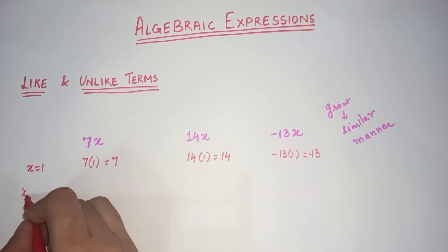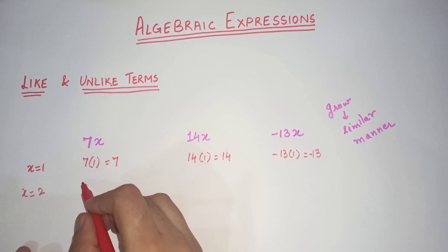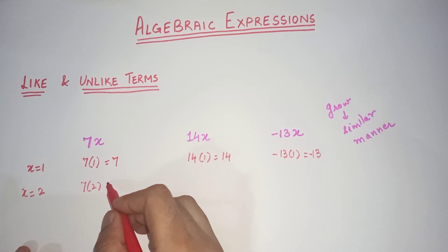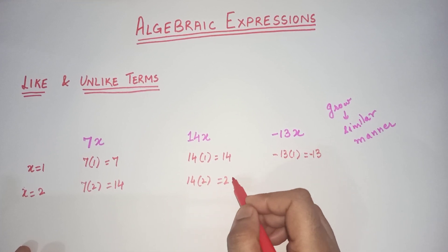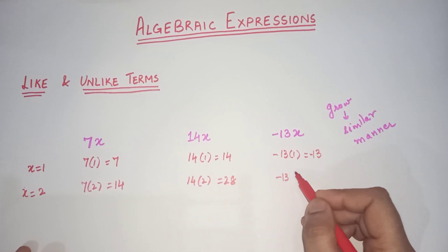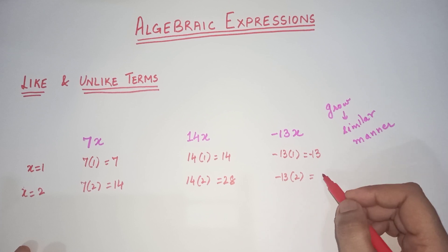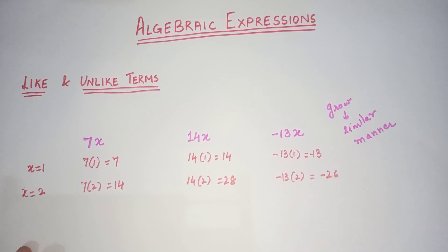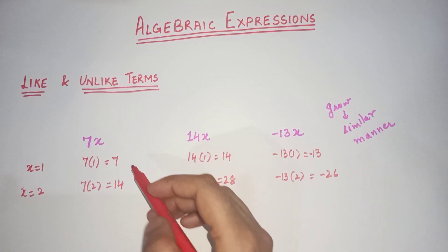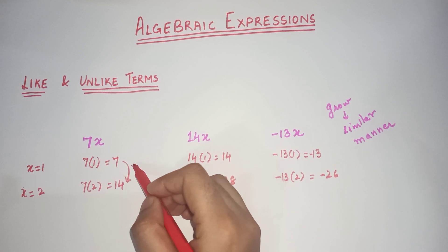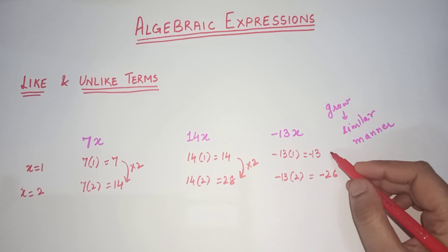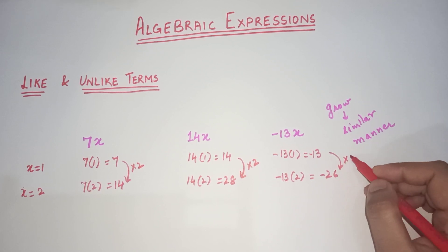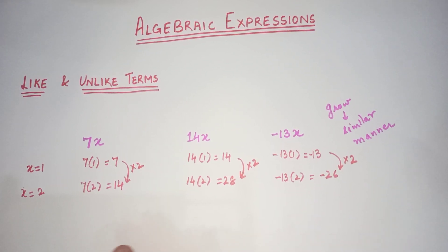Let's take x as 2. Now 7 times 2 is 14, 14 times 2 is 28, and negative 13 times 2 is negative 26. Just observe these two values — each one is getting multiplied by 2. This also is getting multiplied by 2, and this also is getting multiplied by 2. So we can see that they are behaving in a similar way.